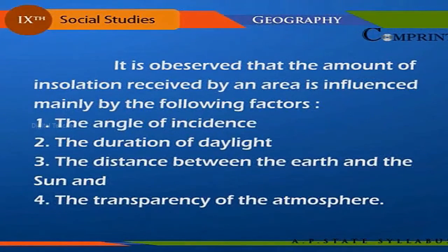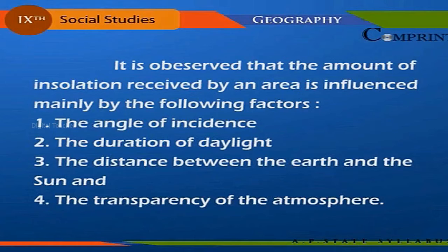The amount of insolation received by an area is influenced mainly by the following factors: the angle of incidence, the duration of daylight, the distance between the Earth and the Sun, and the transparency of the atmosphere.